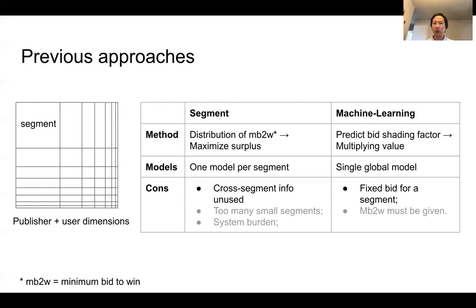The machine learning approach treats the problem as a prediction problem. It tries to predict the best shading factor and then apply that bid shading factor on top of the value of the ad opportunity.